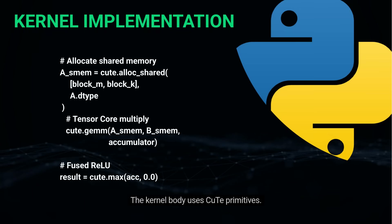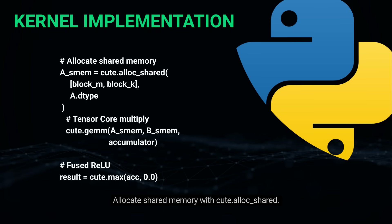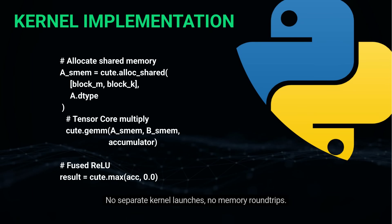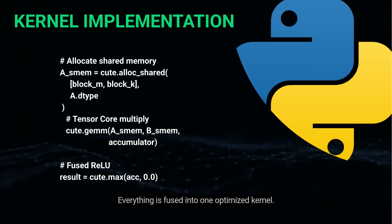The kernel body uses CuTe primitives: allocate shared memory with cute.alloc_shared, invoke tensor core operations with cute.gemm, and fuse the activation function directly — a ReLU with cute.max. No separate kernel launches, no memory round trips. Everything is fused into one optimized kernel.